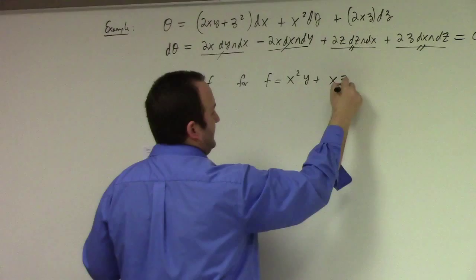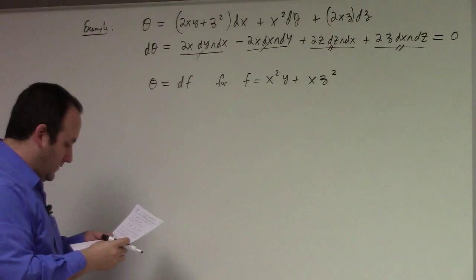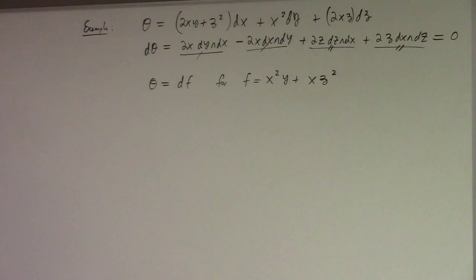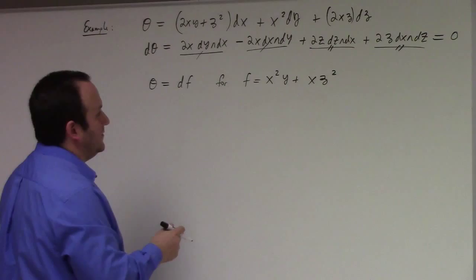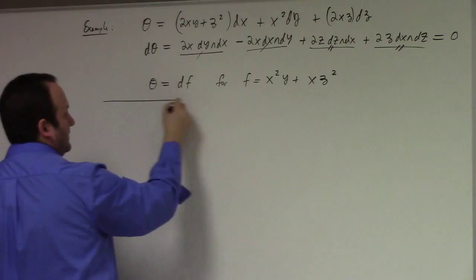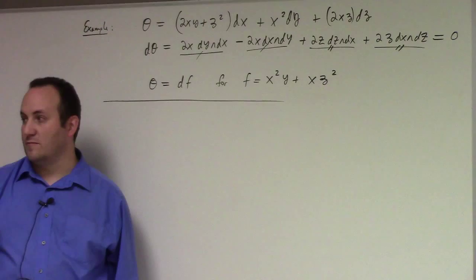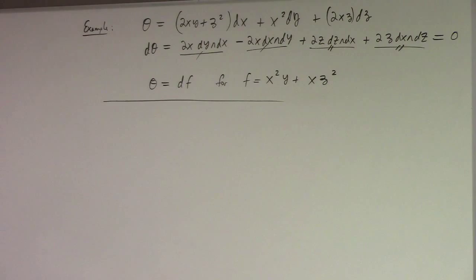More generally, we have this. For just one one-form, how does the Frobenius theorem in differential form truncate? It becomes: dθ ∧ θ equals zero — or something like θ ∧ α. If dθ is not equal to zero, that implies θ is not equal to df. But if dθ is proportional to θ in some sense, that gives you the integrating factor condition.